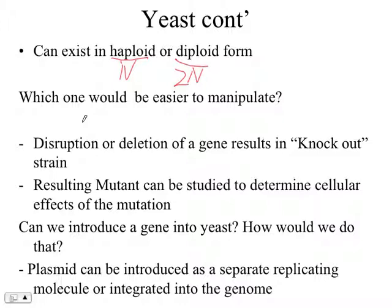To introduce a different gene into yeast there are several ways. One way is to use a plasmid — that's transformation, which is what we are going to do today. Another way is to introduce the insertion directly into the genomic region by homologous recombination.